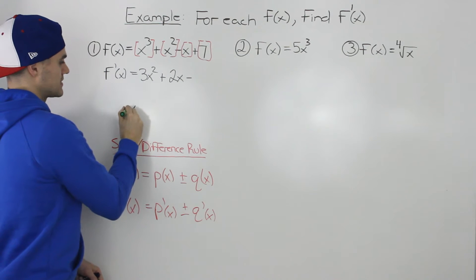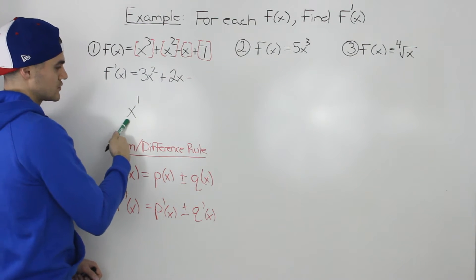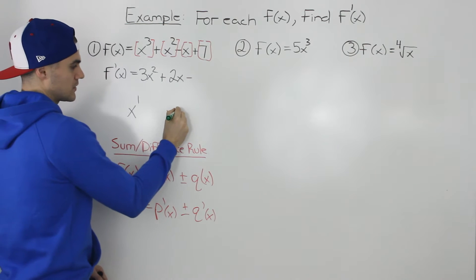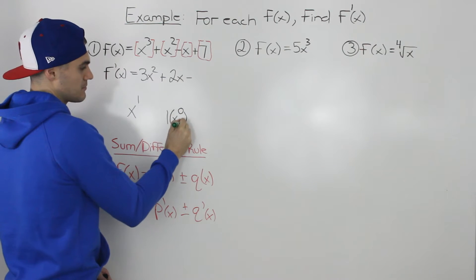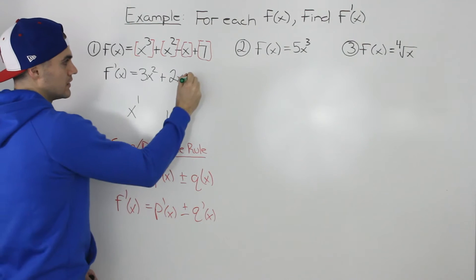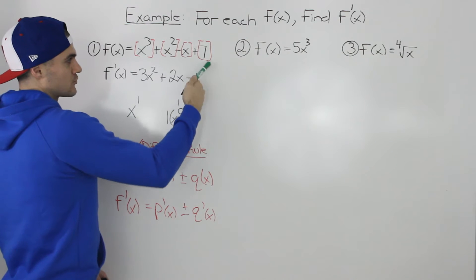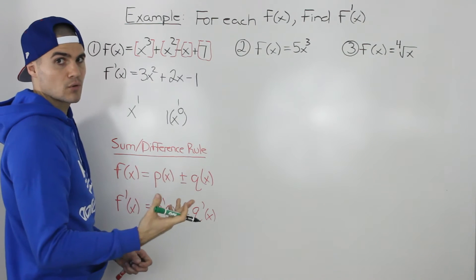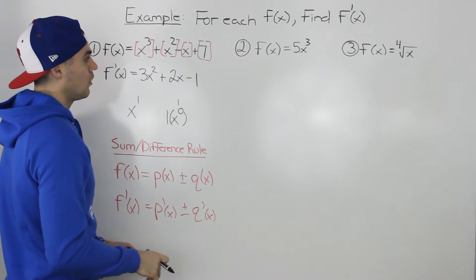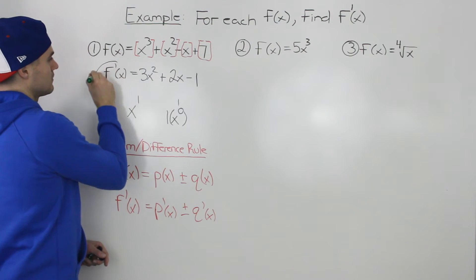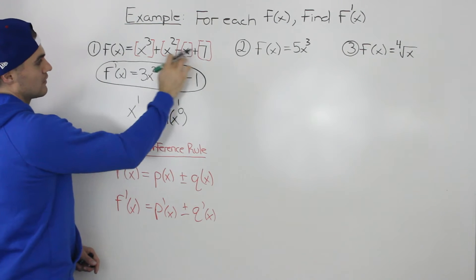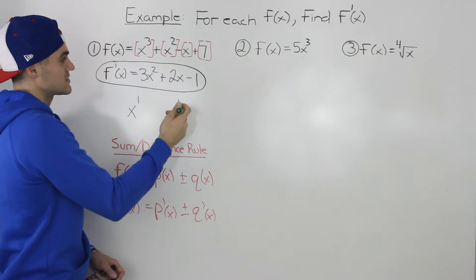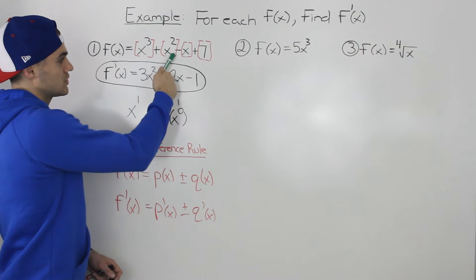Then we put a subtraction symbol. Now, this x by itself is like x to the power of 1. If we take the derivative using the power rule, we bring the 1 in front and subtract 1 from the exponent, leaving us with x to the power of 0. Anything to the power of 0 is 1, so the derivative of x is just 1. And the derivative of the constant 7 is 0, from the constant function rule. So the final answer is 3x squared plus 2x minus 1.